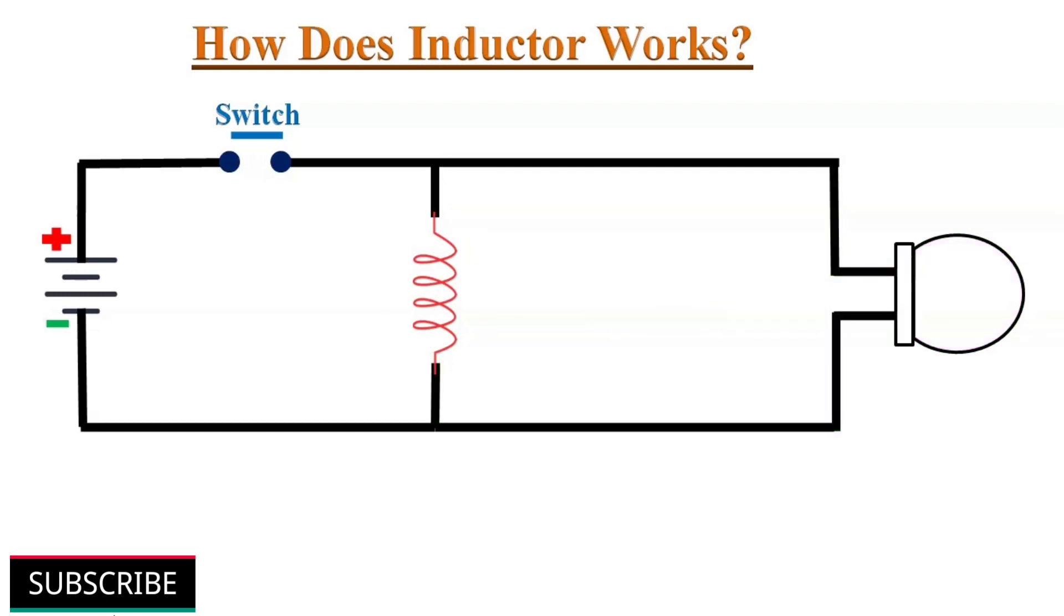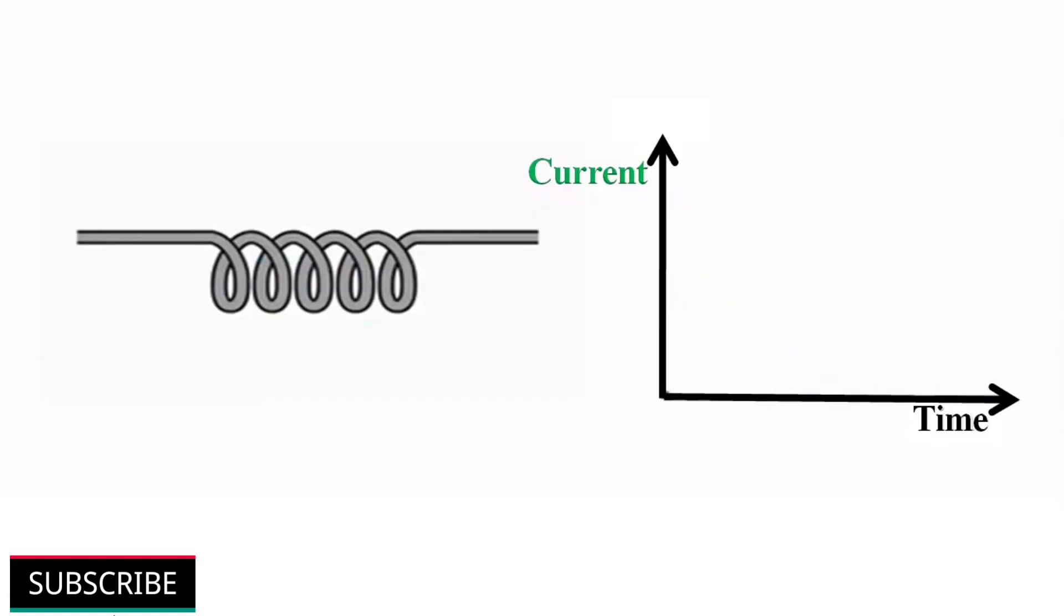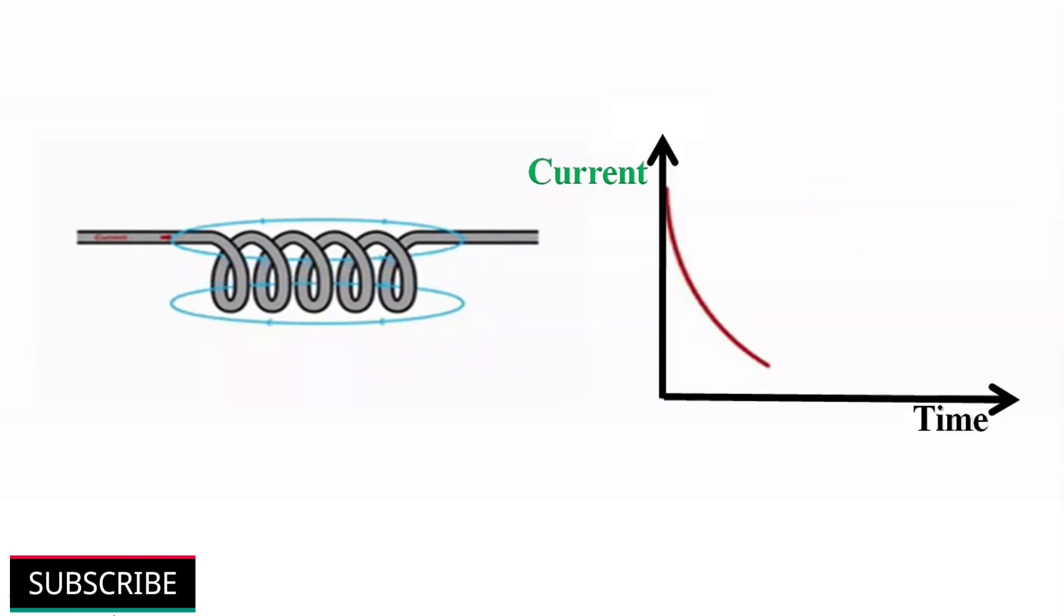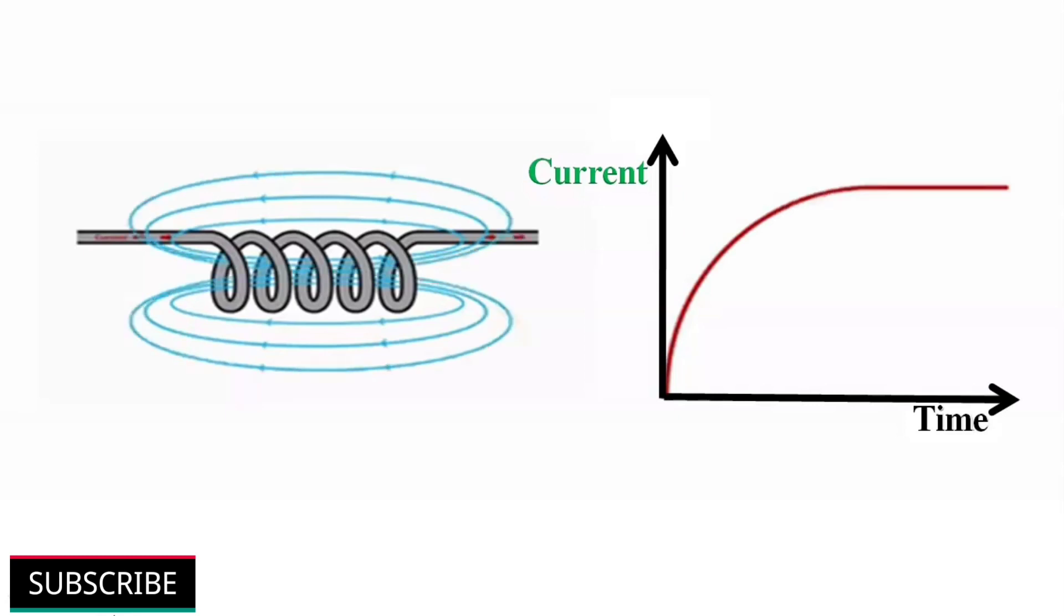When current first starts to flow through the inductor, the magnetic field starts to expand and becomes stable at a point. So we get some energy stored in the magnetic field. When current stops flowing, the magnetic field starts to fall. At this point, the magnetic energy turns back into electrical energy and is consumed by the circuit. So inductors are temporary storage areas for energy.